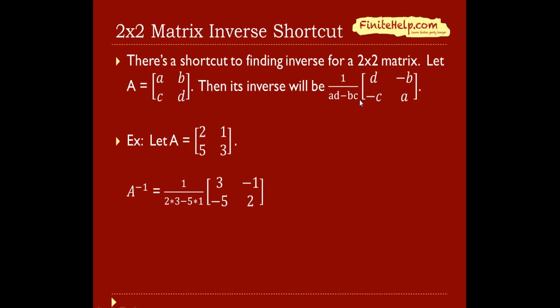Its inverse is going to be 1 over ad minus bc. a and d are going to switch positions, and b and c are going to switch signs. And 1 over ad minus bc, this is a constant. So if this number is anything other than a 1, then we'll multiply them into every single number of this matrix.